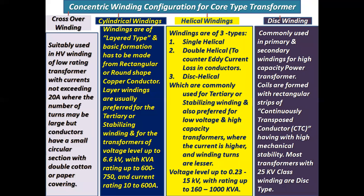For concentric winding configurations in core type transformers: First, crossover winding is suitably used in HV winding for low rating transformers with currents not exceeding 20 ampere, where the number of turns may be large but conductors have a small circular section with double cotton or paper covering. Second, cylindrical windings are of layer type, made from rectangular or round shaped copper conductor; they are preferred for tertiary or stabilizing windings and for transformers of voltage level up to 6.6 kV with kVA rating up to 600–750 and current rating 10 to 600 ampere.